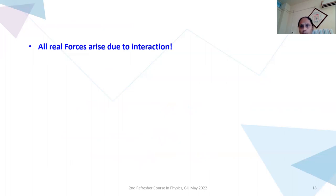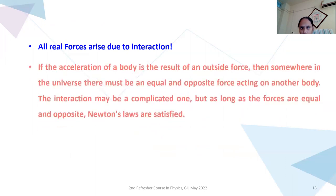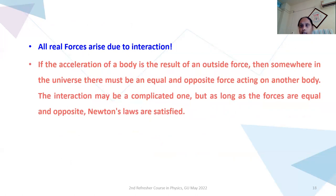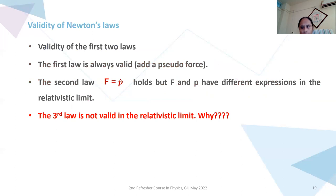We all know that all real forces arise due to interactions. If the acceleration of a body is the result of an outside force, that is external force, then somewhere in the universe there must be an equal and opposite force acting on another body. The interaction may be complicated one, but as long as the forces are equal and opposite, Newton's laws will get satisfied. Newton's third law also emphasizes on conservation of momentum.